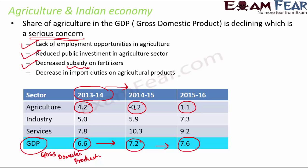There is also a decrease in import duties on agricultural production. As a result of all these factors, the cost of production for a farmer is increasing — he has to buy fertilizers, insecticides, pesticides, and invest in irrigation — but the output he generates is not worth that cost. In simple terms, agriculture in India is not in good economic shape today.